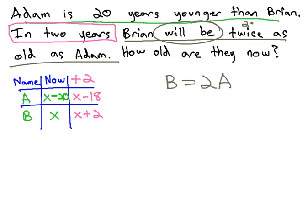What I will do next is marry the table and the equation together using the future column. Brian is going to be replaced with the cell from the future referring to Brian, the x plus 2. Always in parentheses when we make a substitution.